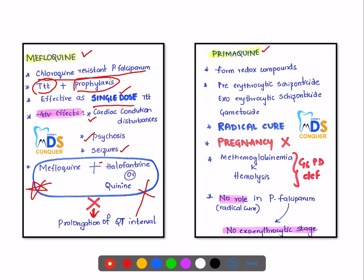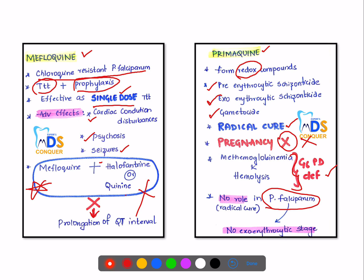Primaquine forms redox compounds and has multiple uses — it acts as a pre-erythrocytic schizonticidal, exoerythrocytic schizonticidal, and gametocytocidal drug, and is used for radical cure. It cannot be used in pregnancy. It can cause methemoglobinemia and hemolysis in G6PD-deficient patients. Since Plasmodium falciparum has no exoerythrocytic stage, primaquine has no role in falciparum malaria radical cure.